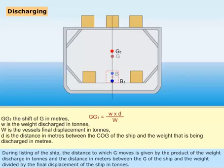During listing of the ship, the distance to which G moves is given by the product of the weight discharged in tons and the distance in meters between the G of the ship and the weight, divided by the final displacement of the ship in tons.